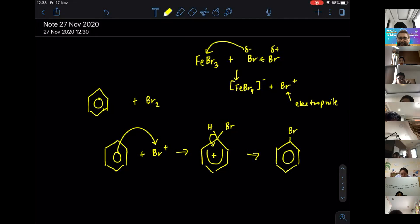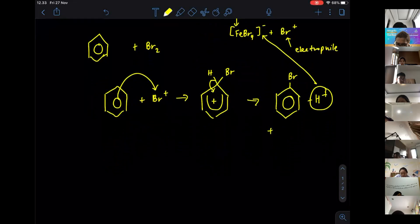So the H+ that is given out, they are going to react with FeBr4 negative, which is going to give you FeBr3 again, plus HBr. So this is what is going to happen.